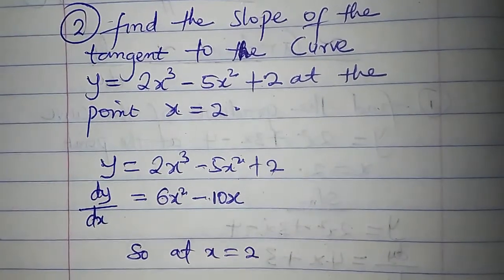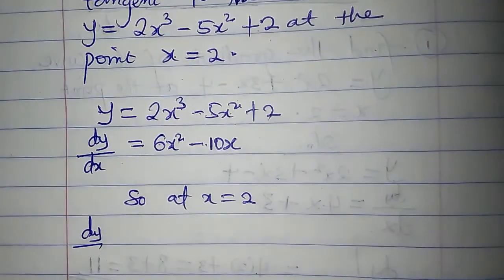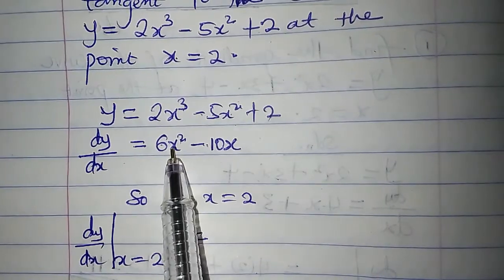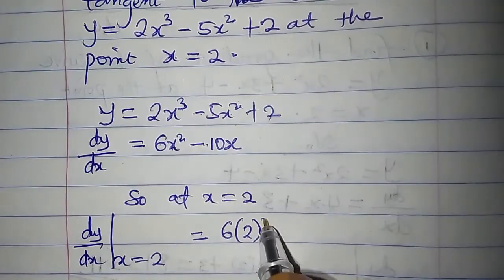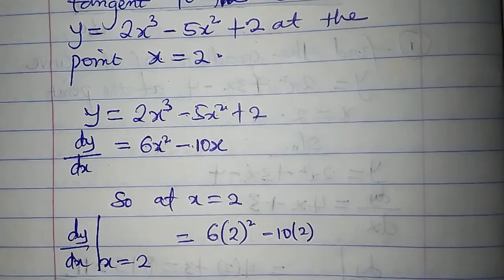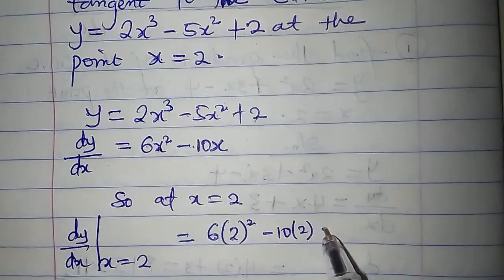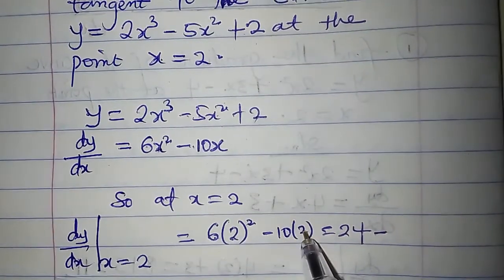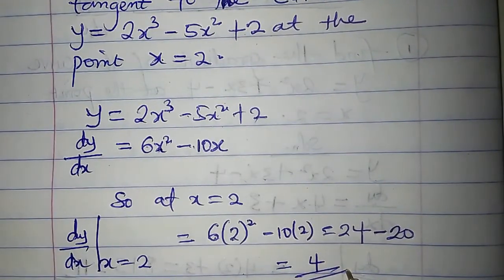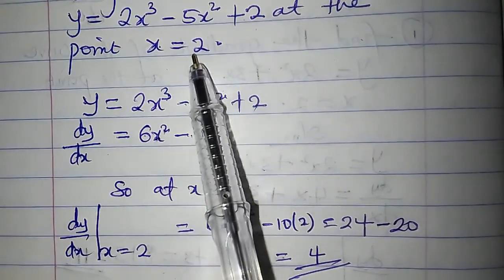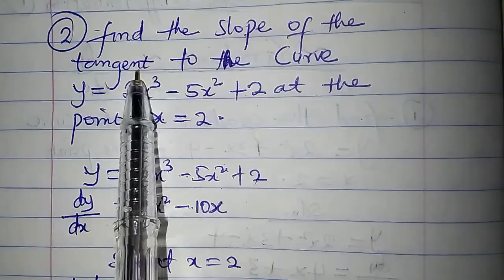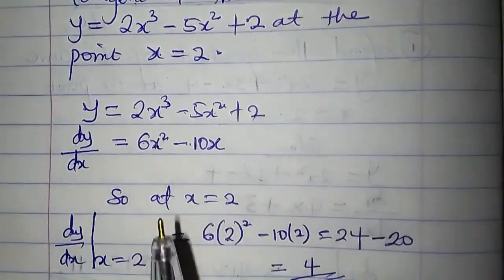At x = 2, the gradient of the curve dy/dx equals: in place of x we write 2, so 6 times 2² minus 10 times 2. 2 squared is 4; 4 times 6 is 24; 10 times 2 is 20. So 24 minus 20 is 4. The gradient of the curve at x = 2 is 4, meaning the slope of the tangent to the curve at x = 2 is also equal to 4.